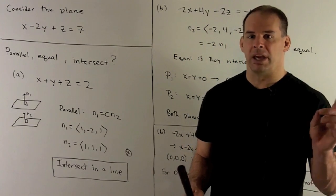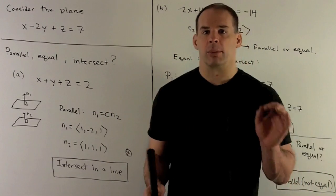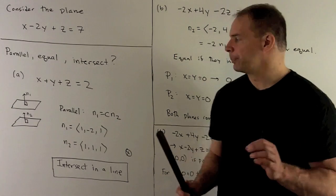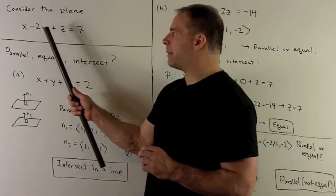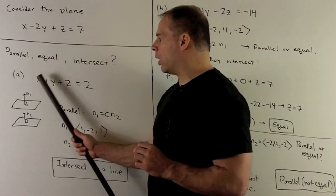If I'm given planes as equations like this, we have the normal directions just by peeling off the coefficients of x, y, and z. So for our plane here, we'll have 1, minus 2, 1. Then the normal direction here will be 1, 1, 1.